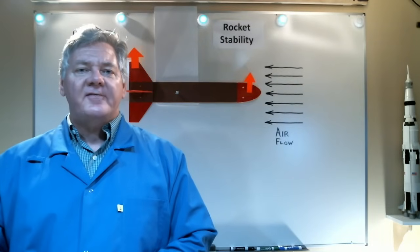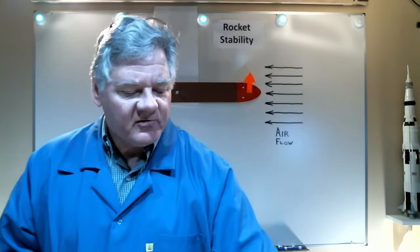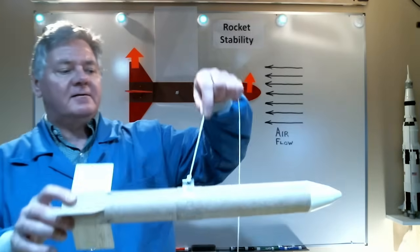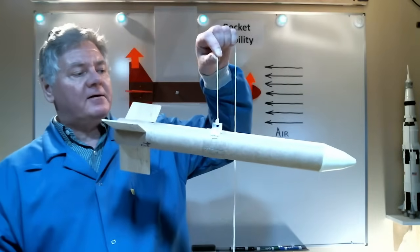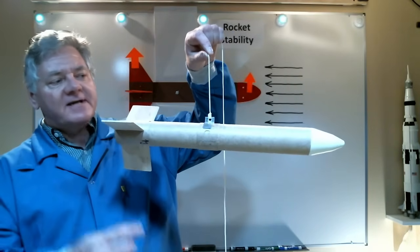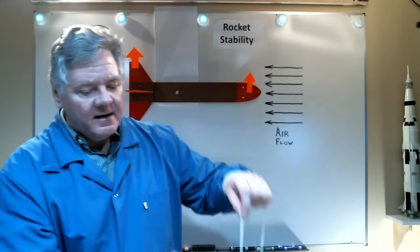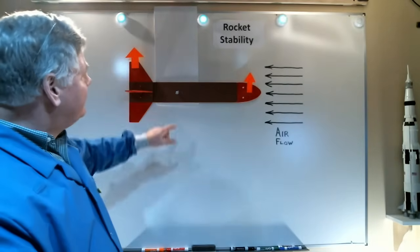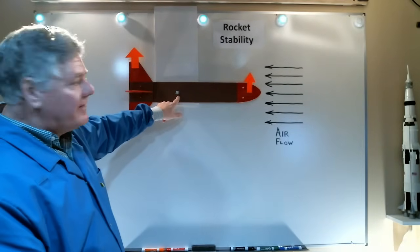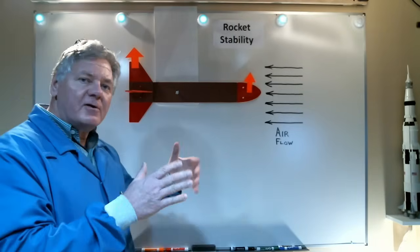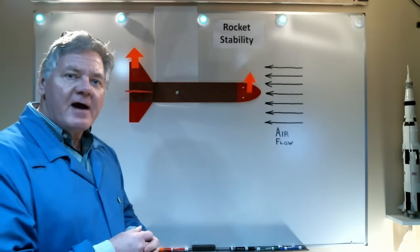Now, the other factor we have to consider is the center of gravity of the rocket. The center of gravity is simply the balancing point. And I can show that on this model here, hanging from a string, it balances out. So, that is the center of gravity. Now, we'll let the center of gravity be represented by the pivot point here on my model on the board. That's actually quite accurate because the actual rocket will pivot around the center of gravity.